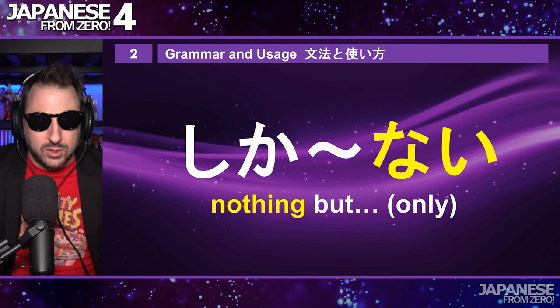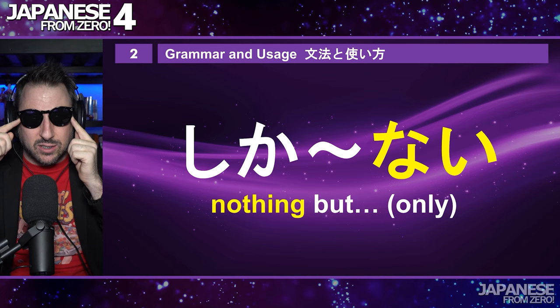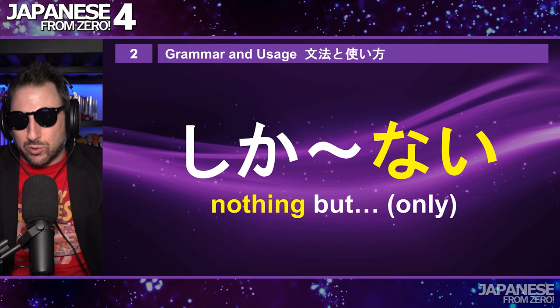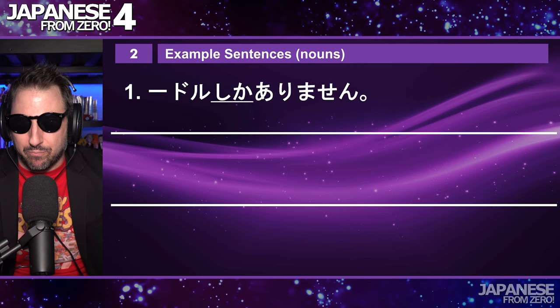For example, sanglasu dake arimasu — I only have sunglasses. But that's not really the most common way that Japanese people say there's only something. The shika nai format is so much more commonly used.